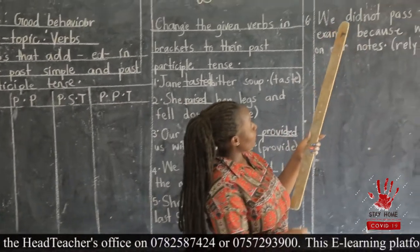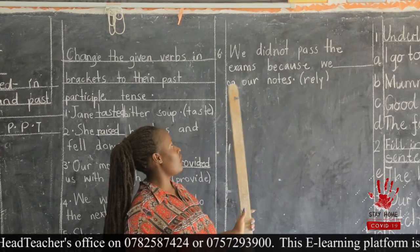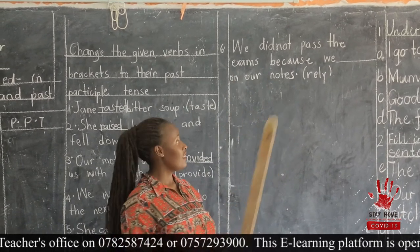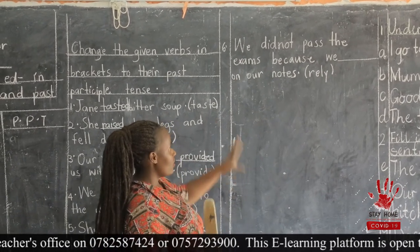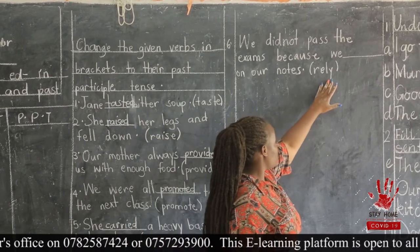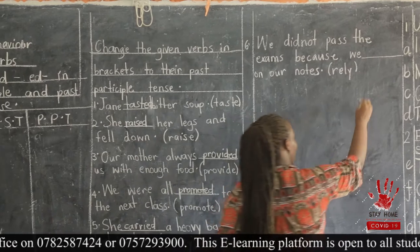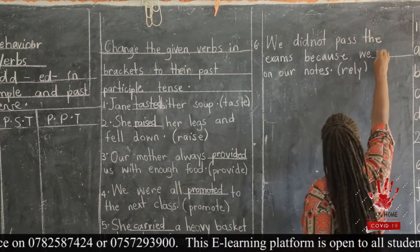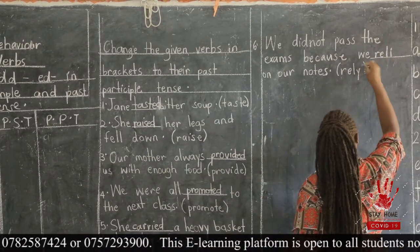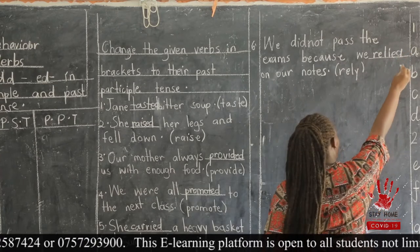The next sentence was: We did not pass the exams because we ___ on our notes — in brackets we had 'rely.' According to the rule that governs this word in regular verbs, we remove Y and add IED, so the answer was 'relied.'